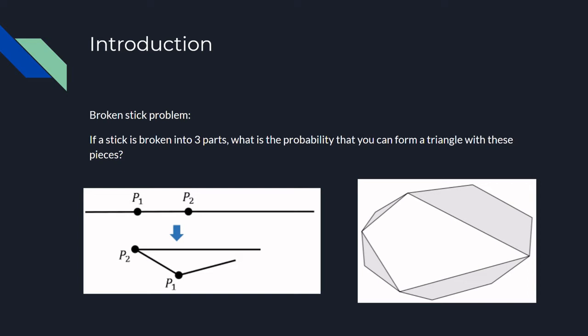So the original answer to this is one-fourth, and this problem has been extended to many different variations such as finding the expected area of these formed triangles and breaking the sticks into more than three parts.